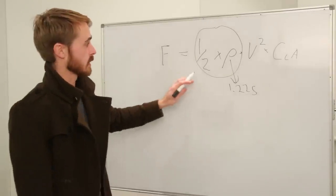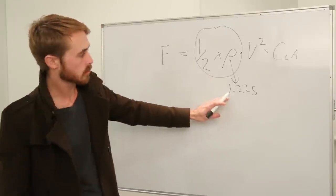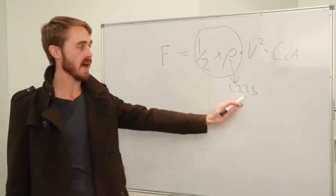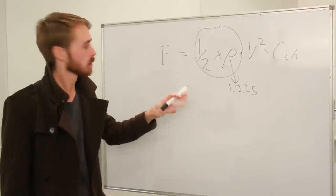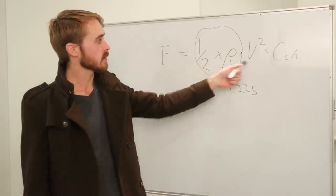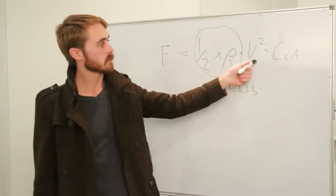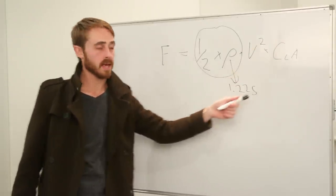This part of the equation is easy enough. This is pretty much always a constant. You can assume that the density of air is usually about 1.225 kilograms per meter cubed. About. And then you can just see that the force is proportional to the velocity squared times your C L A.